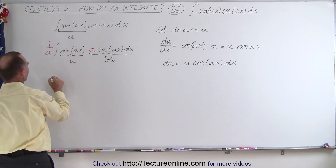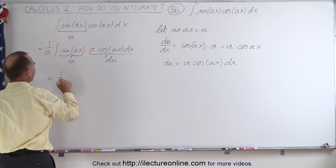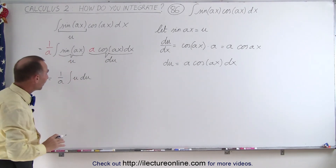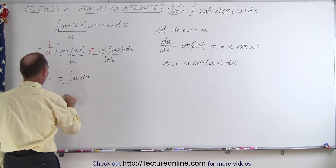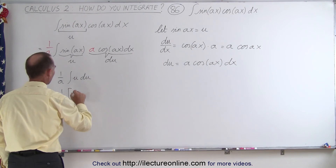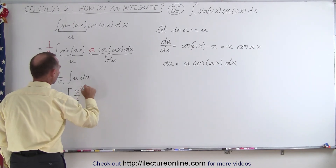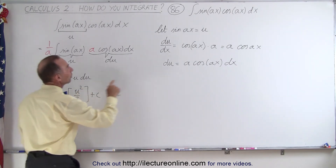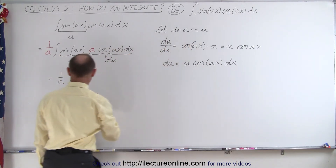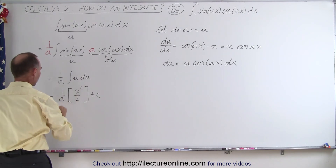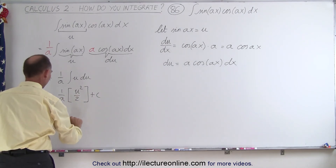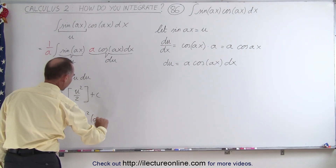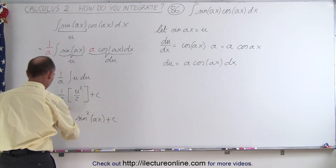So this integral now turns out to be 1 over A times the integral of u times du, which of course is really easy to integrate. So this becomes 1 over A times u squared over 2 plus a constant of integration. And all we have to do is replace what u is equal to, which is the sine of Ax, and of course it's going to be squared, giving us 1 over 2A times sine squared of Ax plus a constant of integration.